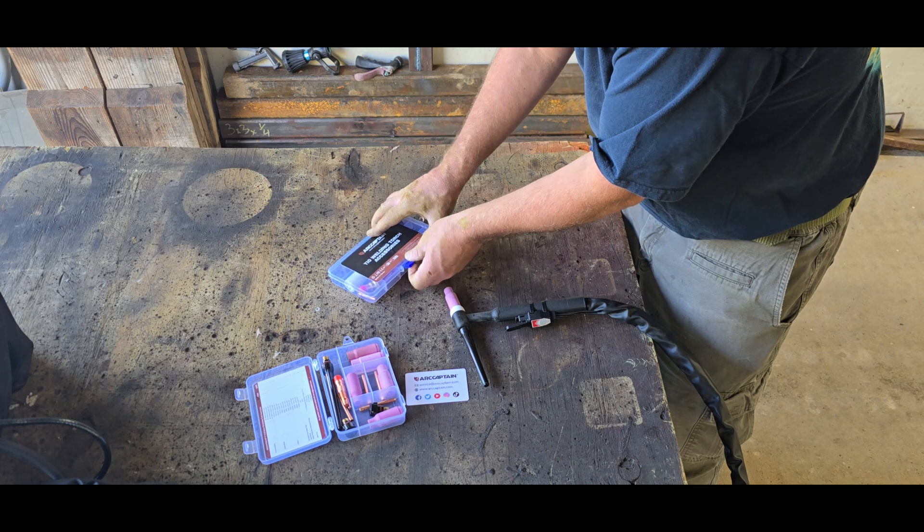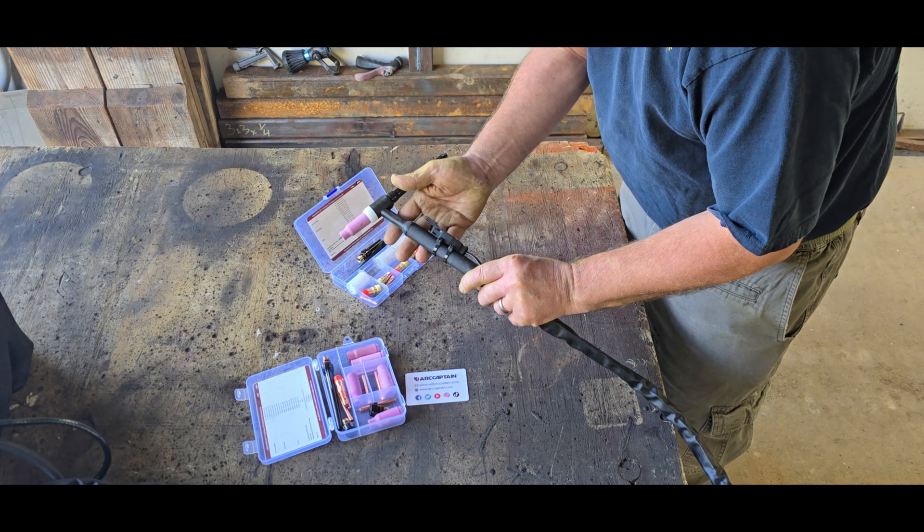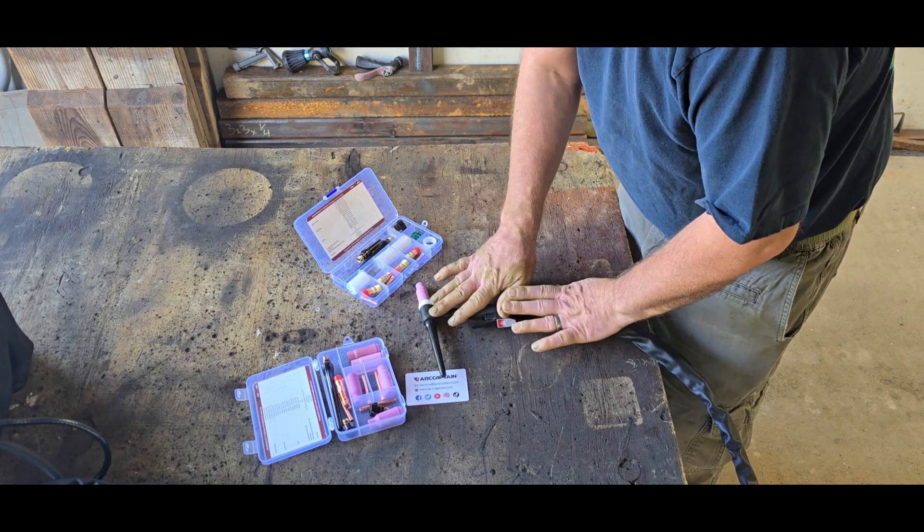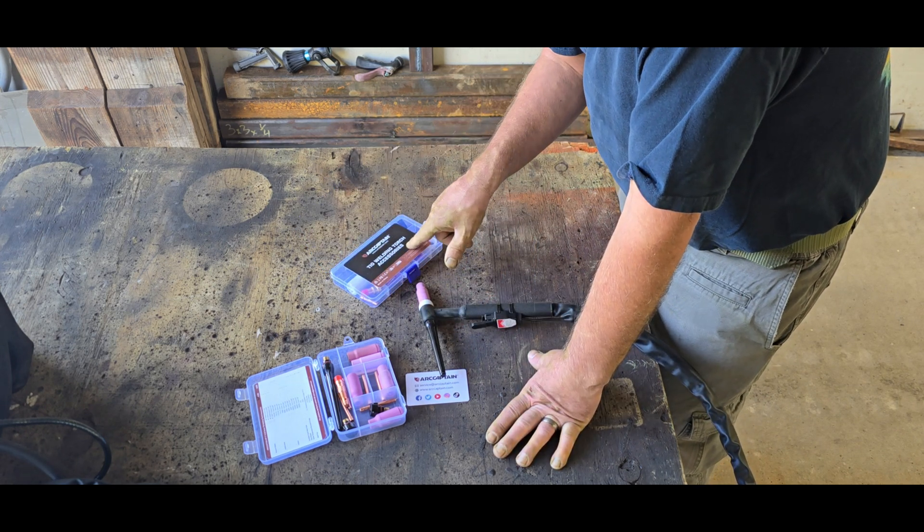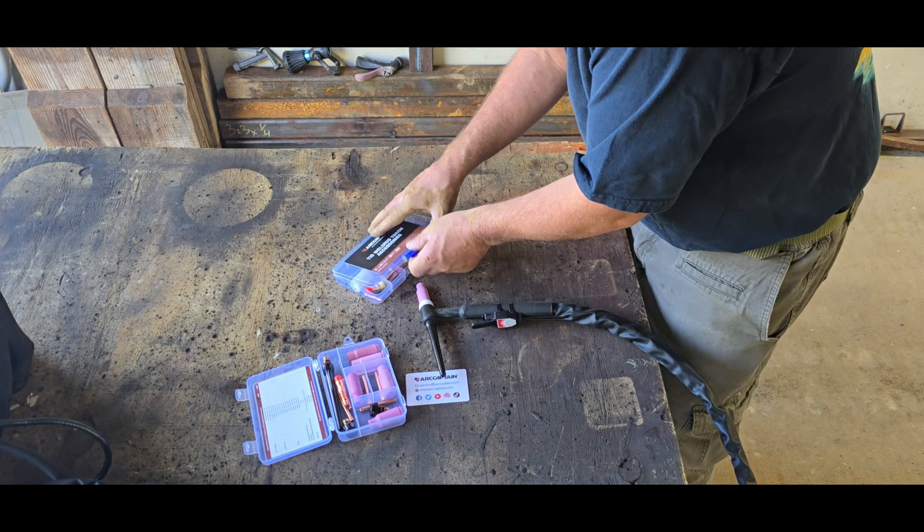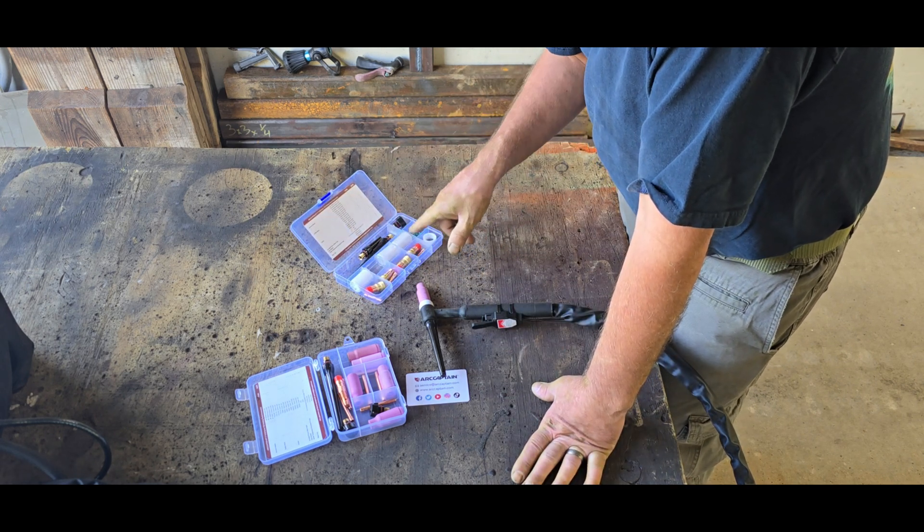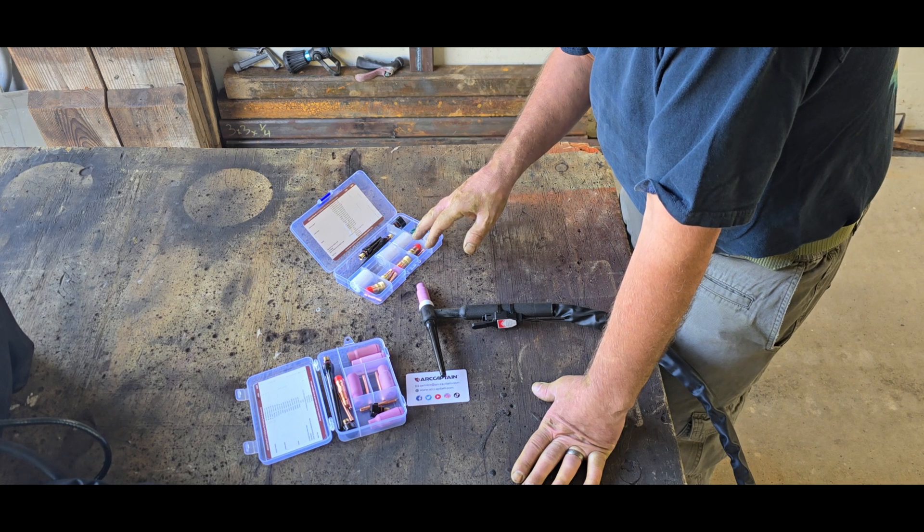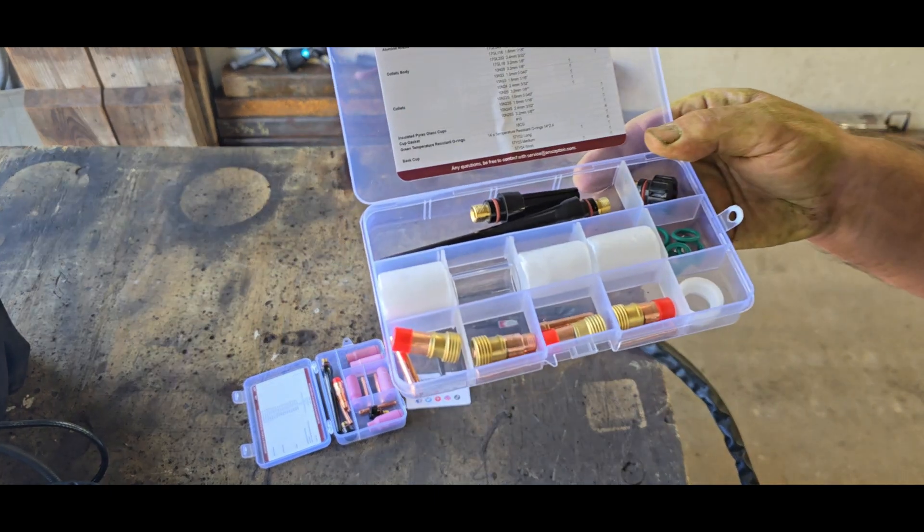You can also upgrade your torch. So this is the standard Art Captain WP-17 torch. With the WP-17 torch, you can buy the TIG welding torch accessory kit that contains the pyrex glass, the nozzles, o-rings, and everything that goes along with that. This is the kit, let me pull this up so you can see here.